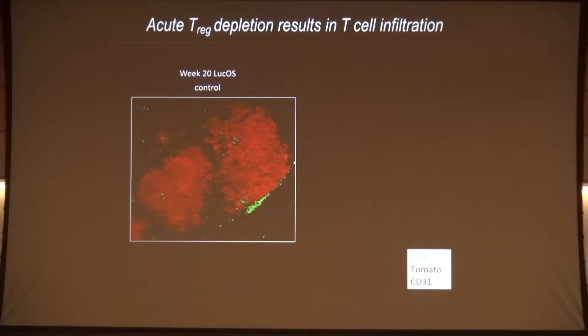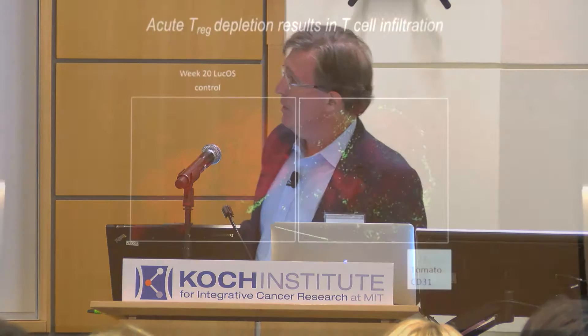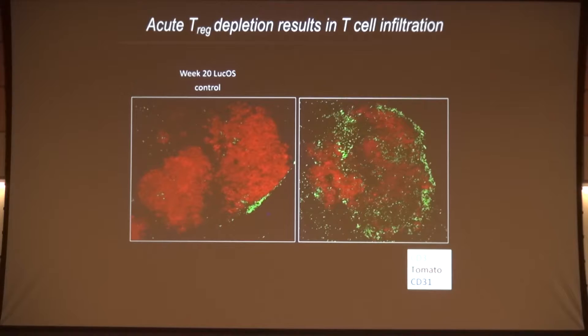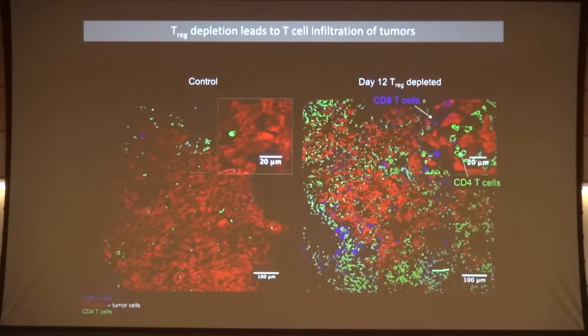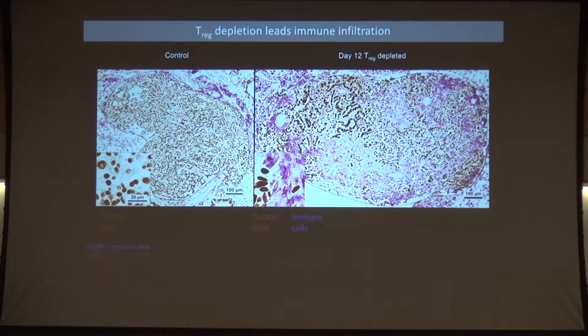The question for us was: what happens in the tumors themselves? Before diphtheria toxin treatment, you have a juicy red, healthy, growing tumor, with T cells hanging out on the edges doing nothing, surrounded by regulatory T cells. After diphtheria toxin treatment and Treg depletion, we observe massive proliferation and infiltration of T cells and other immune cells — both CD8 T cells and CD4 T cells, and also macrophages flooding into the tumor. So regulatory T cells are having an important inhibitory effect; if you get rid of them, you see massive inflammation and overt tumor destruction.